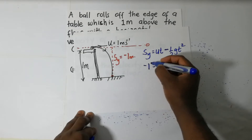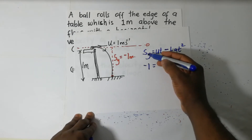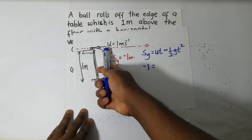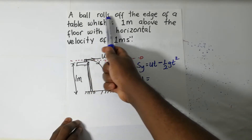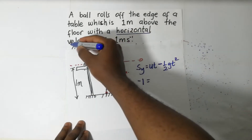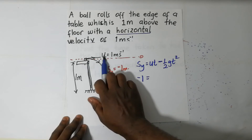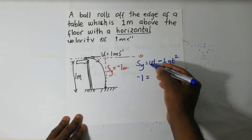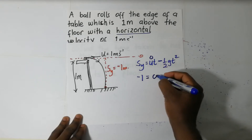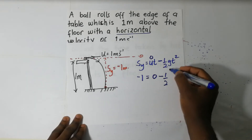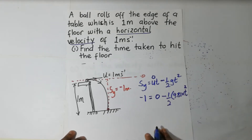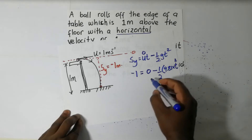So the vertical displacement is negative one, equal to u times t. Since the ball has a horizontal velocity only, there is no component of u in the vertical direction — so that term is zero. It becomes zero minus one half times 9.81 times t squared. That's how we find the time taken to hit the floor.